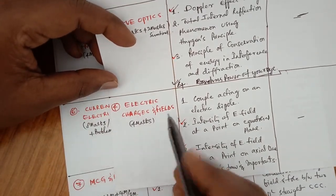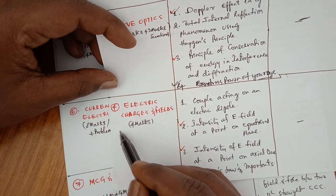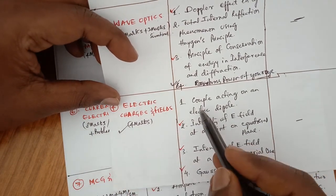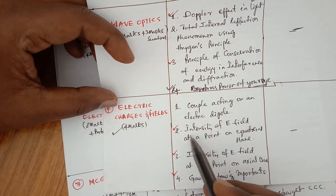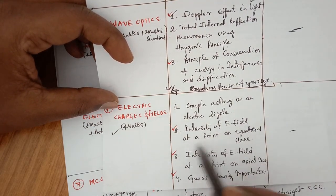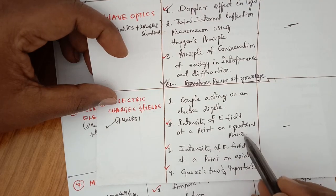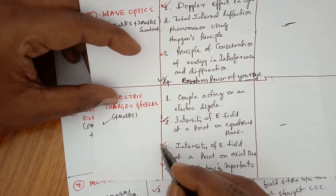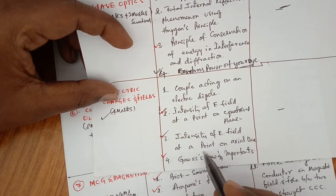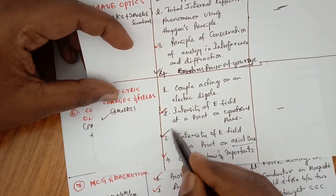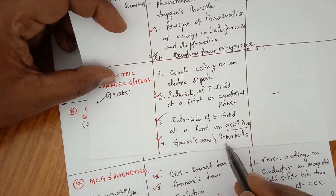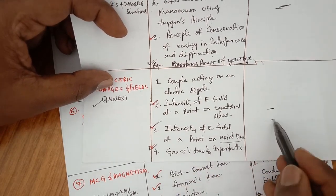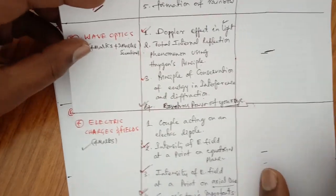Fourth chapter is Electric Charges and Fields. For 4 marks: torque acting on an electric dipole; intensity of electric field at a point on the equatorial line — very, very important, asked many times; intensity of electric field at a point on an axial line — also very, very important; and Gauss's law and its importance — also very, very important. There is no 8 marks question from Electric Charges and Fields.